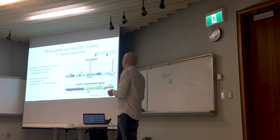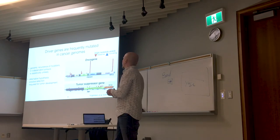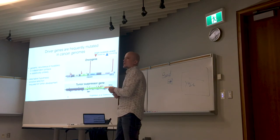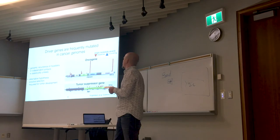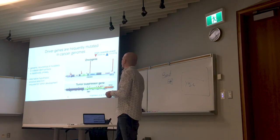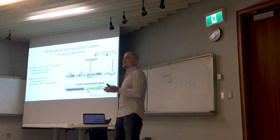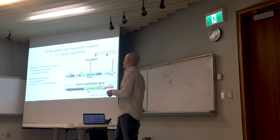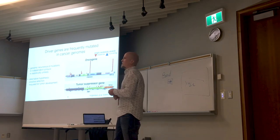Driver genes can be oncogenes or tumor suppressors. Oncogenes get activated; tumor suppressors get inactivated. We see different curious patterns of mutations. Oncogenes tend to accumulate mutations into particular spots of proteins — you can think of a protein as a weapon, and the mutation is the trigger that activates it. Tumor suppressors, on the other hand, accumulate mutations distributed more broadly, and many are truncating mutations causing an early stop codon, producing a short protein. There are many different ways of breaking down a tumor suppressor — a protective mechanism.